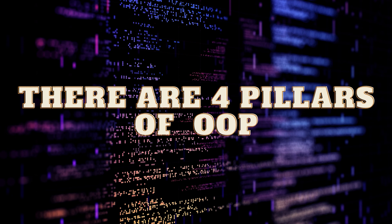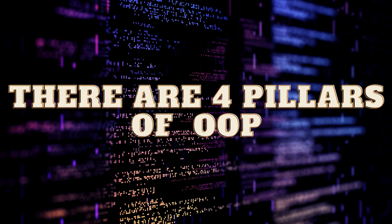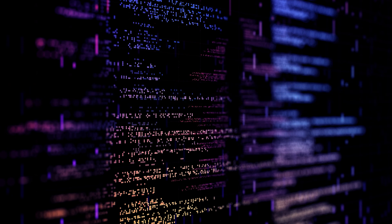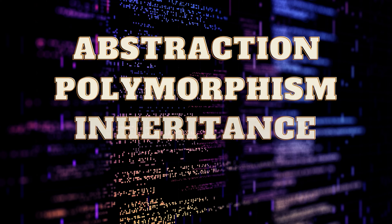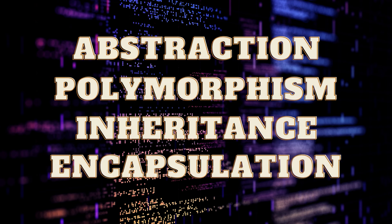There are four pillars to object-oriented programming: abstraction, polymorphism, inheritance, and encapsulation. These are the four primary pillars of object-oriented programming. For those that can't remember that, just remember the phrase APIE. If you ever get on an interview and you're nervous and you get stuck, remember APIE and find the words from that.